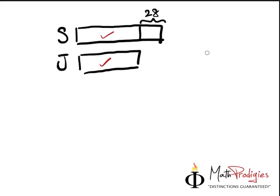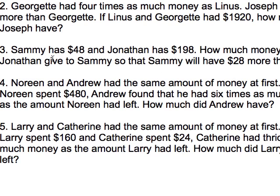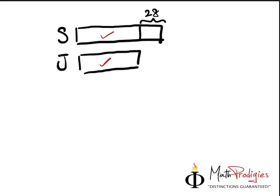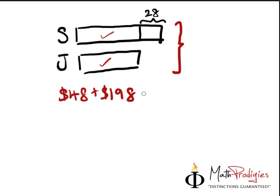What is the clue given to you? The clue is that Sammy has $48 and Jonathan has $198, which means together they will have $198 plus $48. So the total amount is $48 plus $198, which gives you $246. So $246 represents this whole bar.